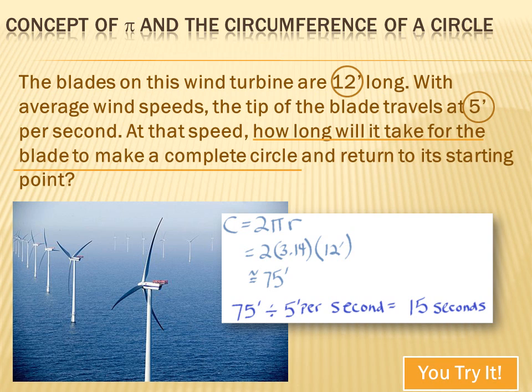Well, to help us solve this problem, it's always a good idea to C-U-C-C. Circle the numbers and underline the questions so we can focus in on the numbers and make sure we know what we've got to work with and understand what question we're really asking. And the question is, how long will it take for the blade to make a complete circle? Well, I think you probably understand that what we're talking about is how long it'll take the tip of the blade to go all the way around and get back to where it started.